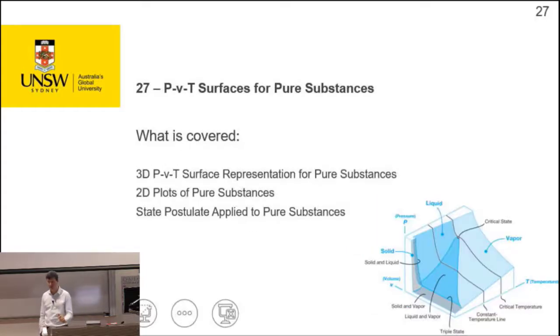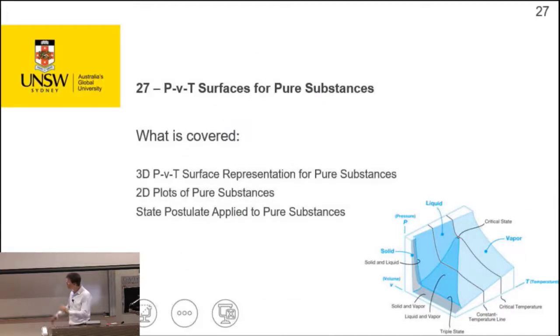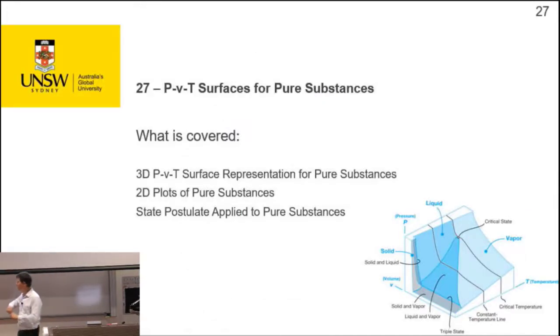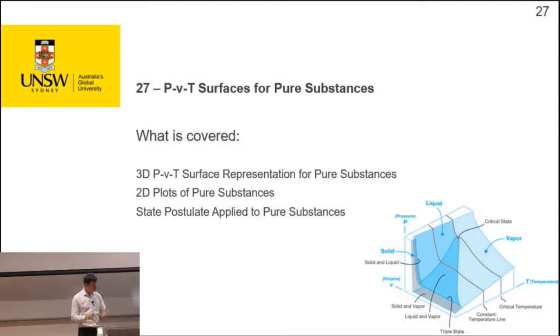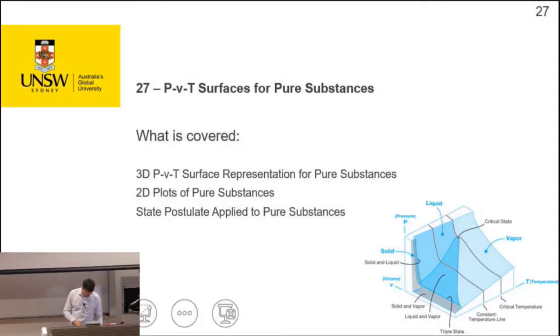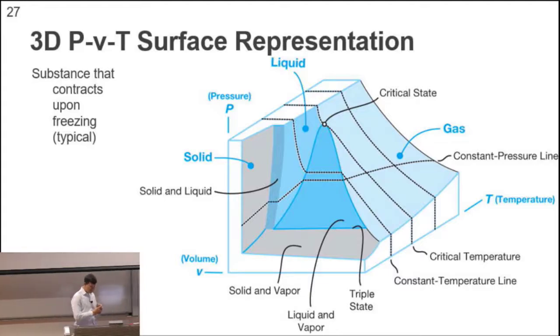If we represented this, I'll show you this 3D thing in a moment. We can represent this not as a table or as a selection of 2D charts. We can actually represent it as a 3D chart. And this is what it looks like for substances that contract upon freezing. So this is things that aren't water. I don't want to spend a lot of time on it, but I'll present the material. Have a look if you like charts and visualizations. This might help you.